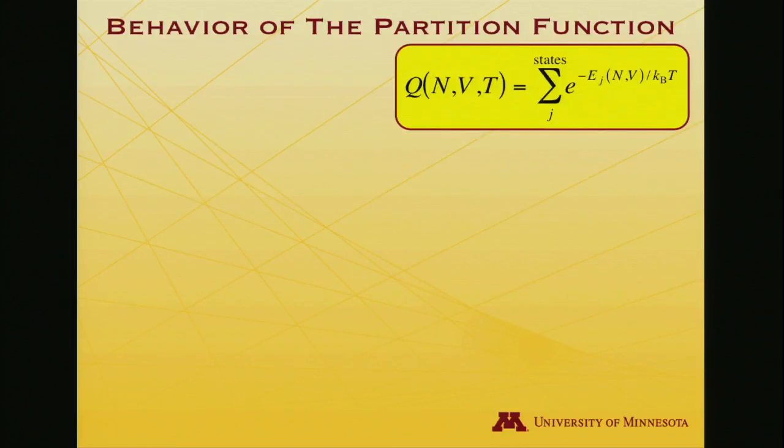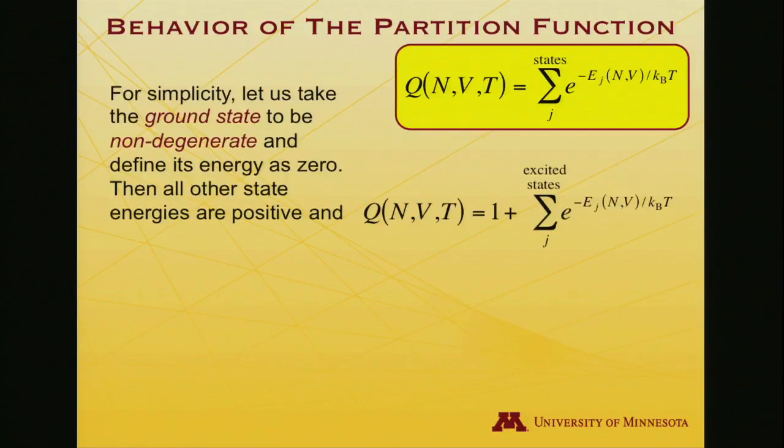So let's think about this partition function. We see the mathematical form, but again, it's nice to have some intuitive feel. What does it mean? What does the value of the partition function tell you? Well, just for simplicity, in order to think about the meaning of the partition function, let's take the ground state of the system, that is the lowest possible energy. Let's take that to be non-degenerate. So there's not multiple ways to make that energy. There's just one state with energy zero. And we will define that energy to be zero. It's arbitrary where you set it. We'll just pick that because it's convenient.